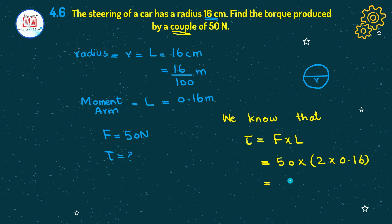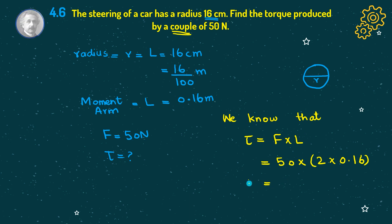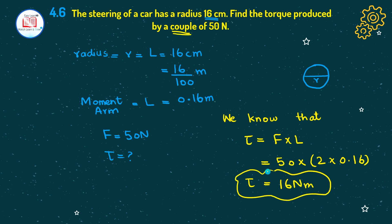This was the trick I mentioned at the beginning: when we have a couple of force given and need to find the torque, the moment arm is multiplied by 2. Solving this gives us a final torque value equal to 16 newton meter. I hope you have no confusion about that question.